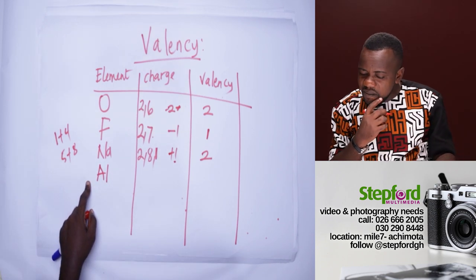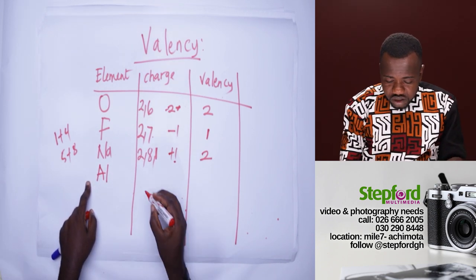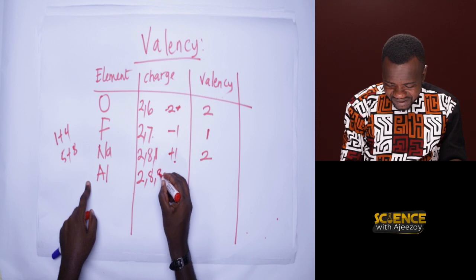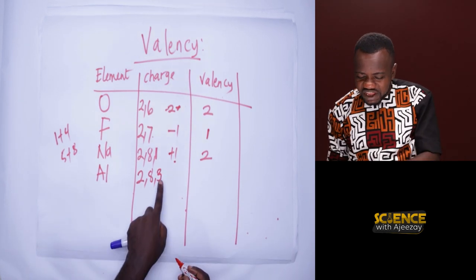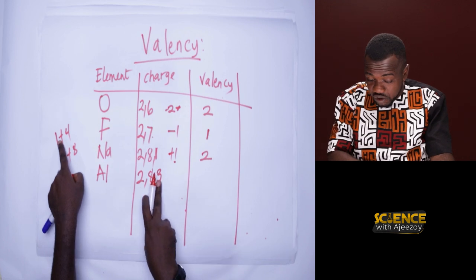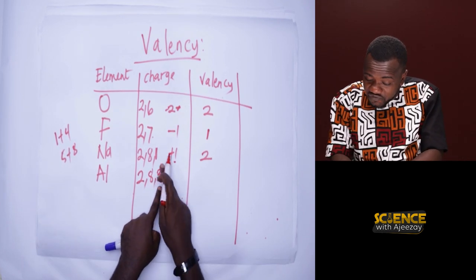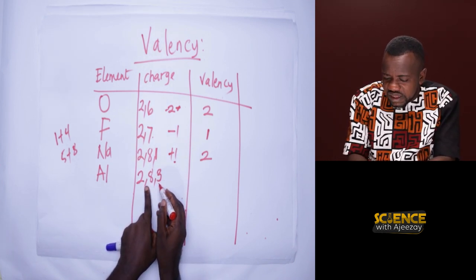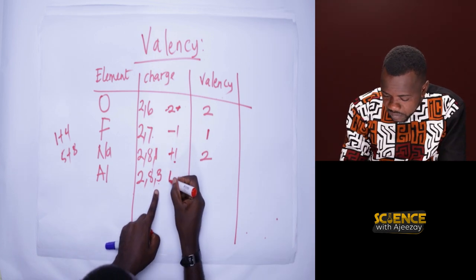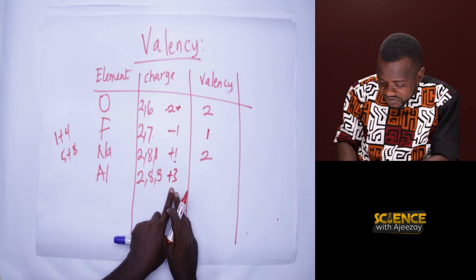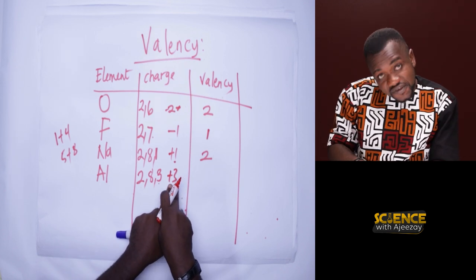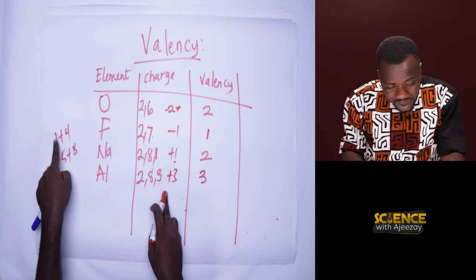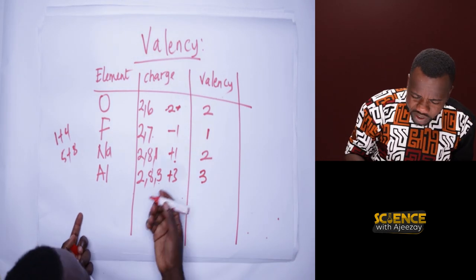Let's take aluminium, which is element 13. Its configuration is 2, 8, 3. The three outer electrons make aluminium unstable, so it will give them out. The charge formed will be plus three. The number attached to the charge is the valency, so the valency is three. Since three is still between one and four, you write it directly as the valency.